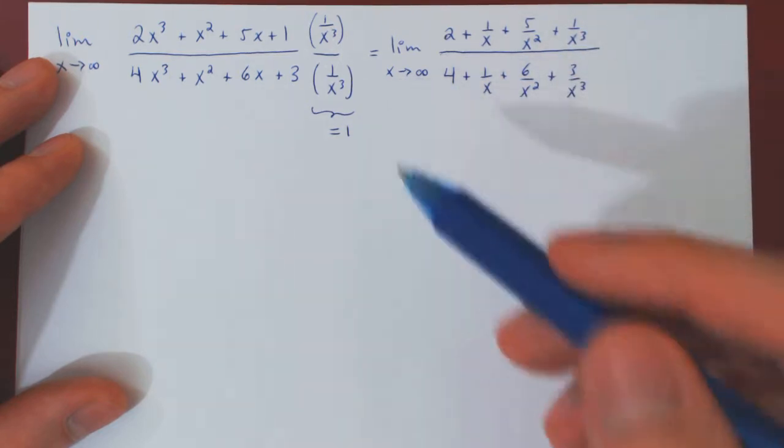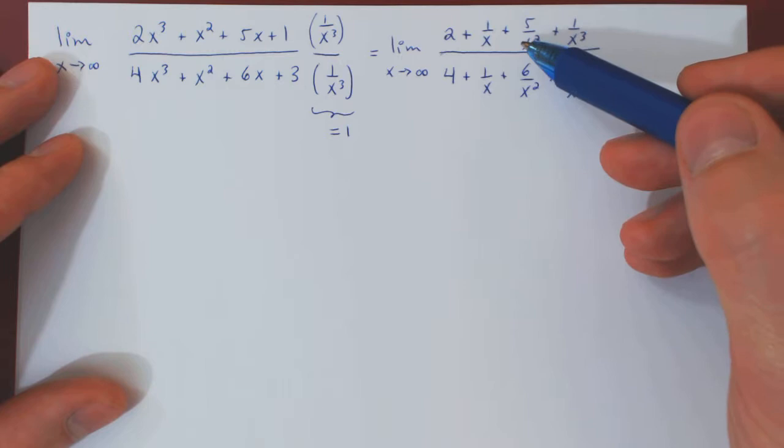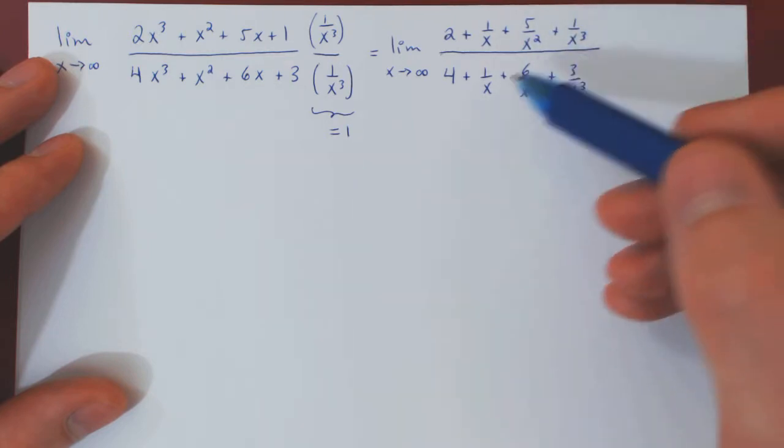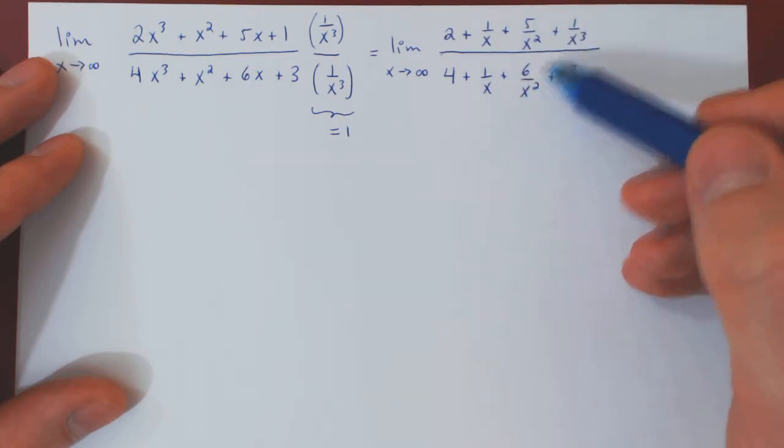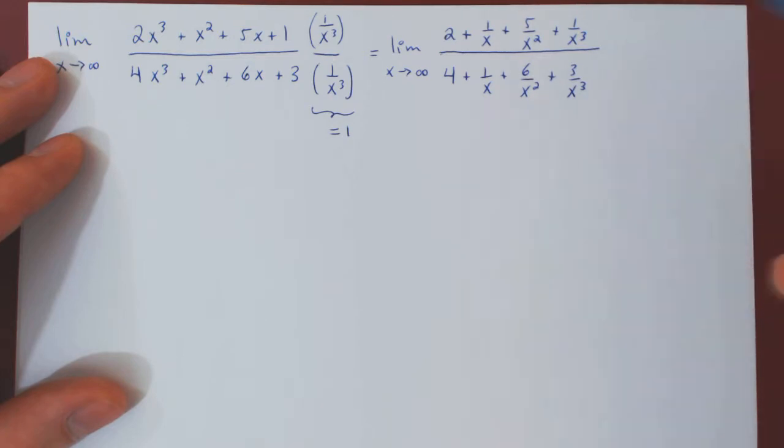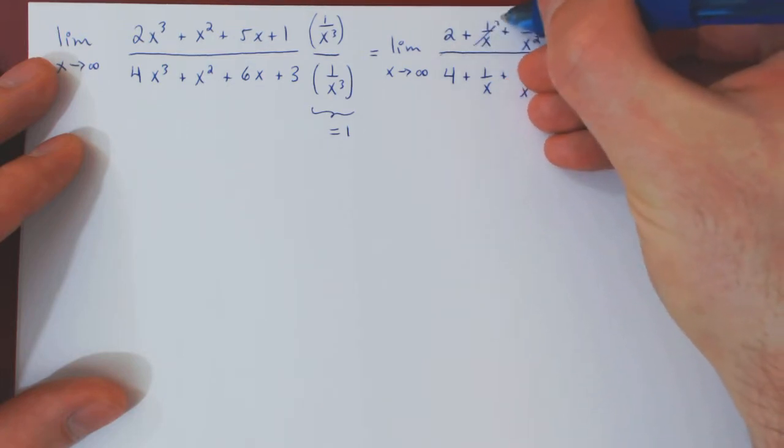And now, if you let x tend to infinity, 1 over x, 5 over x², 1 over x³, 1 over x again, 6 over x², 3 over x³, all clearly shrink to 0.